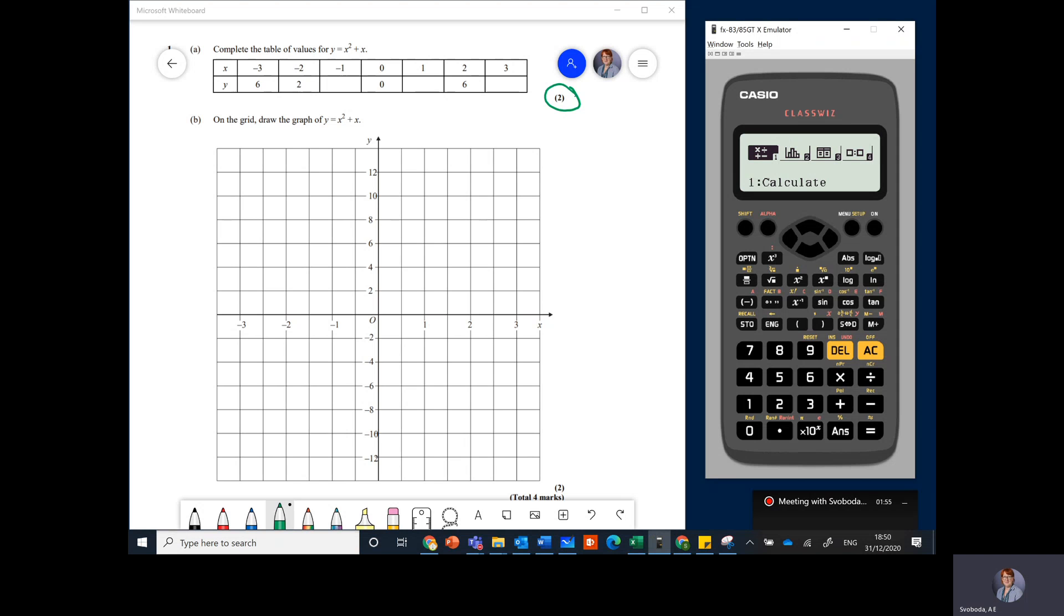What we do first: we press menu and then we go to 3, the table. Obviously you could just press 3 numerically to get there. It will say f of x equals. Now we know that f of x is a function. Even though this says y equals x squared plus x, we know that it could say, if we were using function notation, that f of x equals x squared plus x. So what it's asking us to do is to type in the function that we're trying to draw.